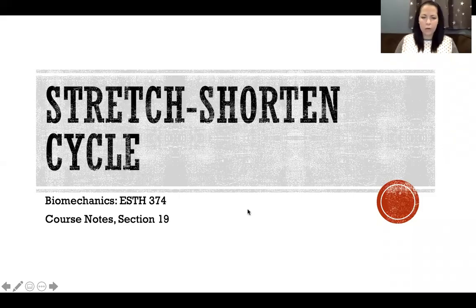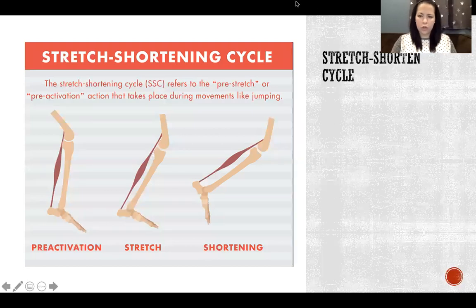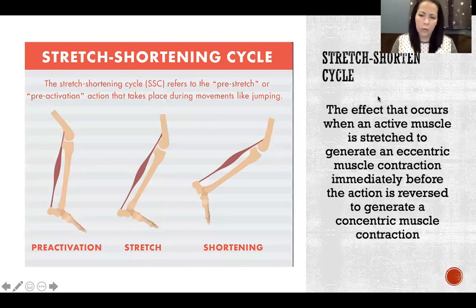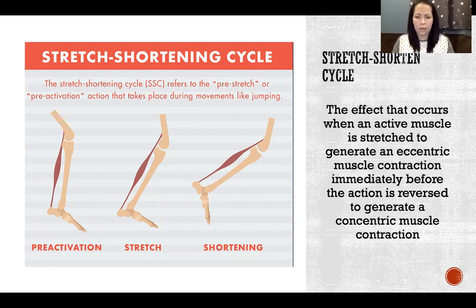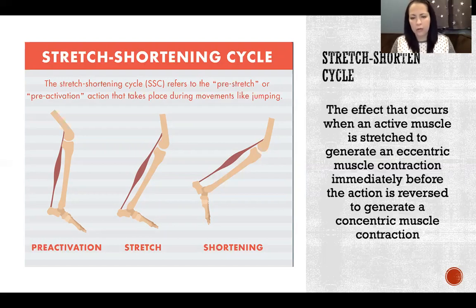In this video I'm going to discuss the stretch-shorten cycle. The stretch-shorten cycle is the effect that occurs when an active muscle is stretched to generate an eccentric muscle contraction immediately before the action is reversed to generate a concentric muscle contraction. So it's any time we have a lengthening of the muscle immediately before that action reverses, and then we have a shortening of the muscle — an eccentric contraction immediately before a concentric contraction.